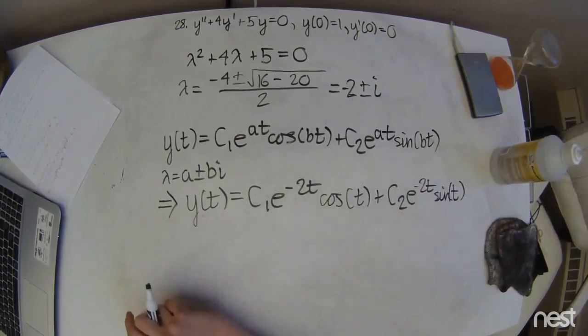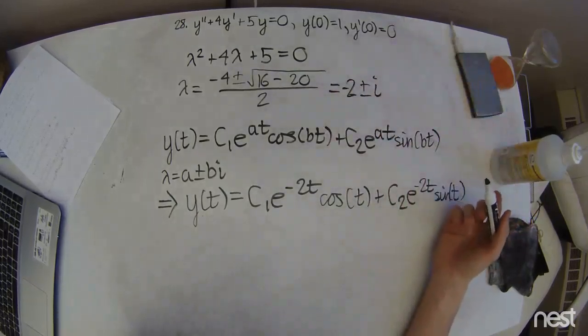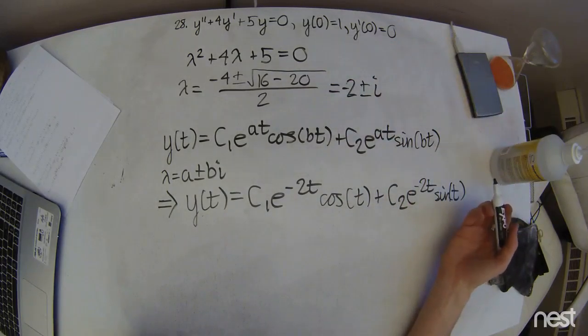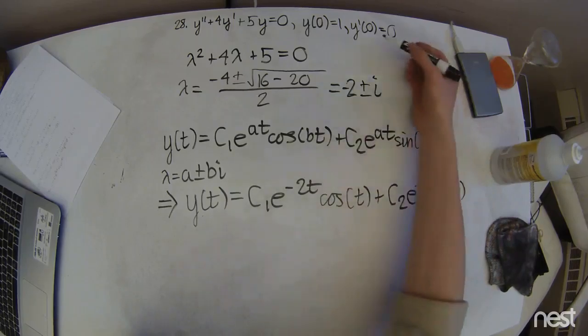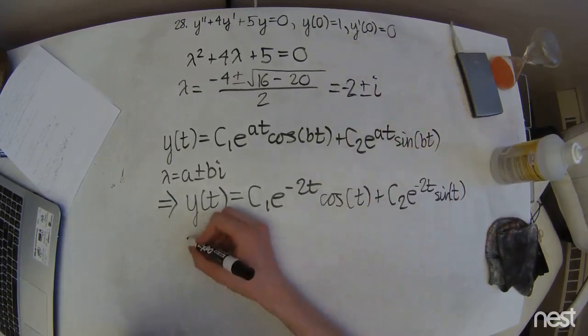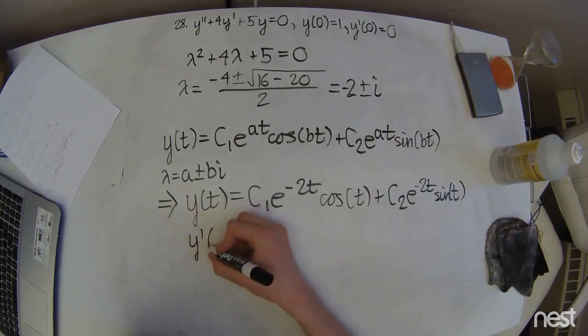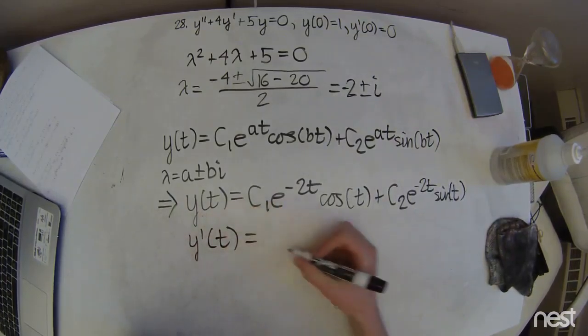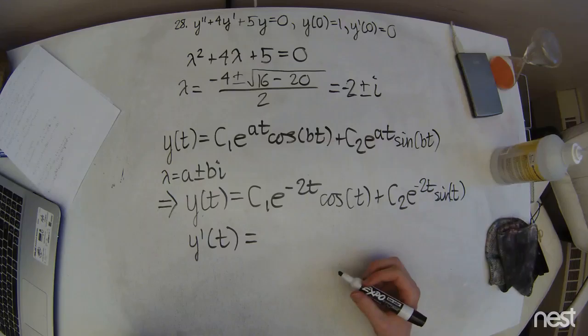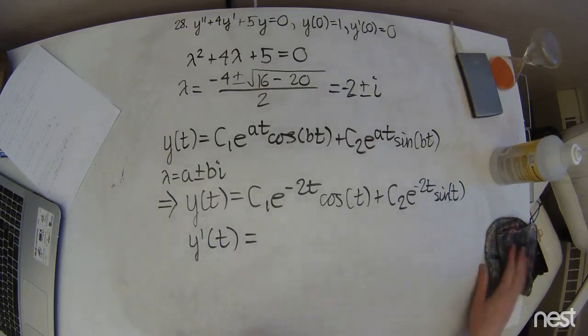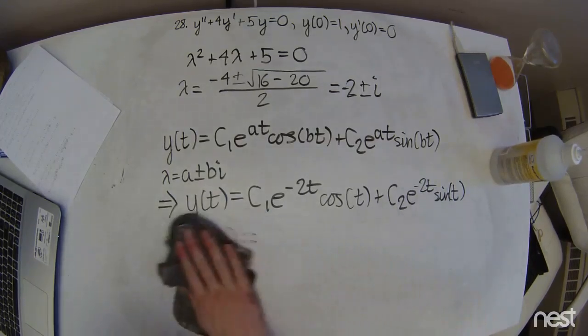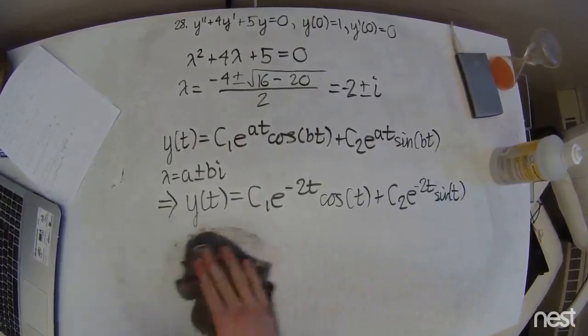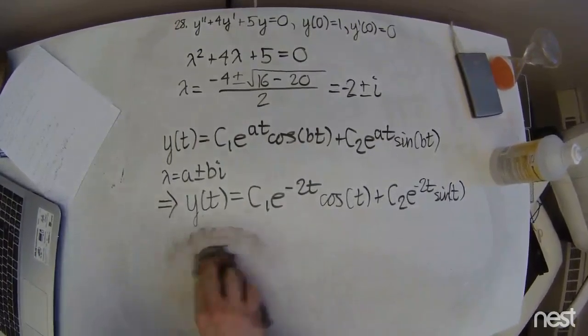Alright, so now this is an initial value problem, so we're going to have to take a first derivative so that we can actually plug in these initial conditions here. So we're going to go ahead and do that. It's going to be y prime of t. Now this is just a real fun product rule, chain rule thing, so I'm going to go ahead and give myself a little more space.